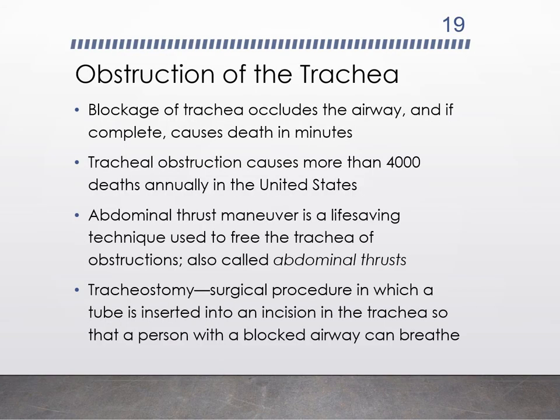If something gets lodged in the trachea, it will block the airway and the individual will be unable to move air in and out of the lungs, which can cause death within just a few short minutes. Experts recommend the five-and-five method: a combination of abdominal thrusts and back slaps to compress the lungs and push air out to remove the blockage. If the blockage cannot be removed and the patient becomes unresponsive, that would call for a tracheostomy.